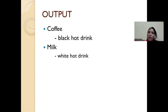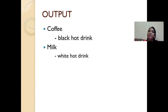This is how you create a list using HTML. There are three types of list — ordered, unordered, and definition list. In the next lecture, we will see how to create tables. Thank you.